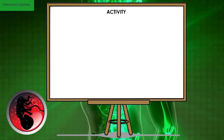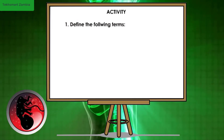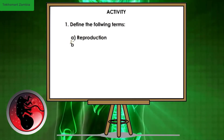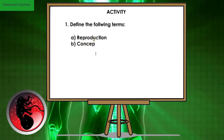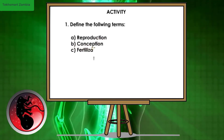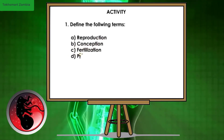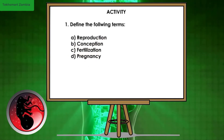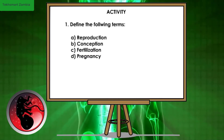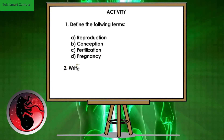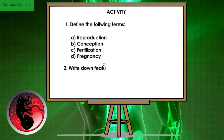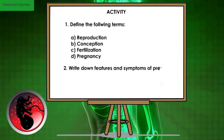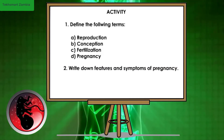Activity 1: Define the following terms. A. Reproduction. B. Conception. C. Fertilization. D. Pregnancy. Activity 2: Write down the features and symptoms of pregnancy.